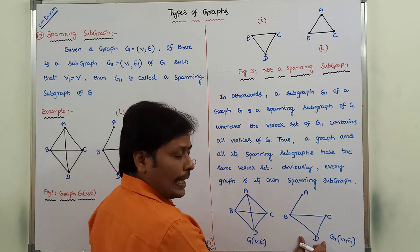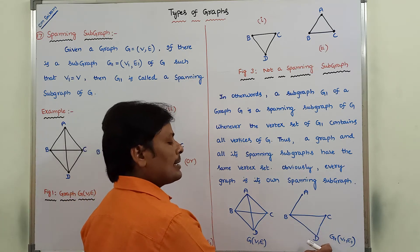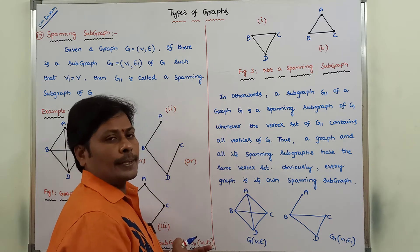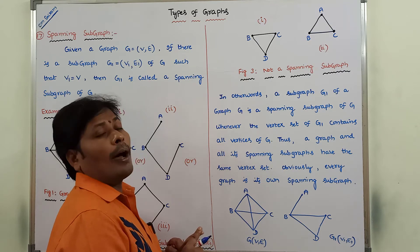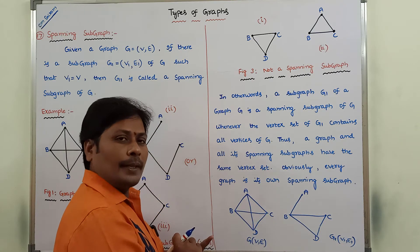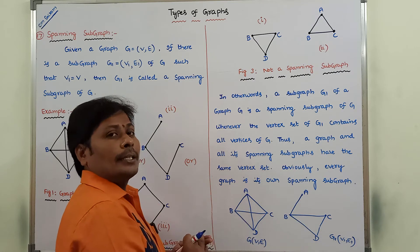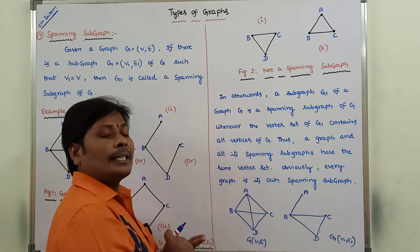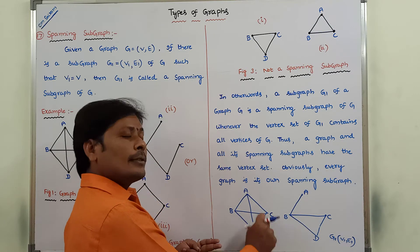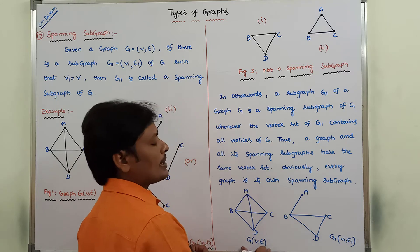When we can say that G1 is a subgraph of G? G1 is a subgraph of G if and only if it satisfies two conditions. The first condition is: all the vertices and edges present in G1 should also be there in G. The second condition is: whatever edges are present in G1, the end vertices for all those edges in G1 must also be there in G. If it satisfies these two conditions, then we can say that G1 is a subgraph of G.